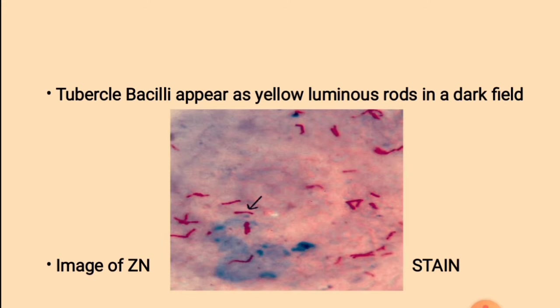Here is the image of Ziehl-Neelsen stain. Looking at this picture, we can see that the tubercle bacilli appear as red in color.